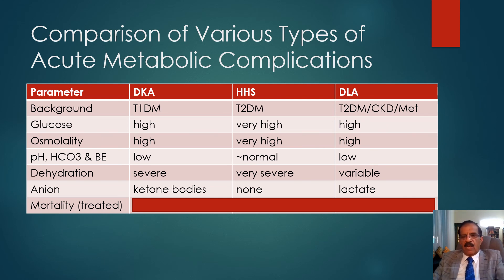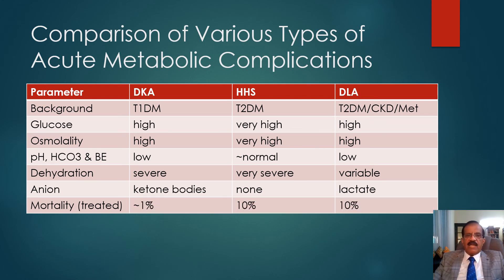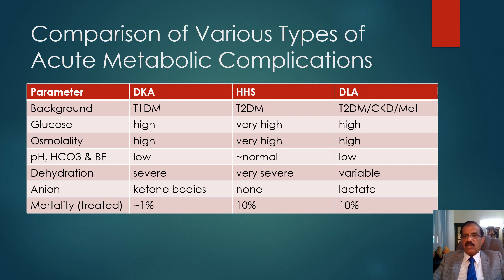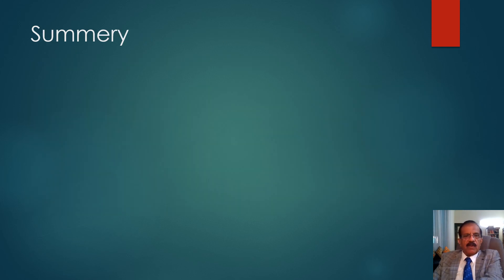Regarding mortality when treated: in diabetic ketoacidosis mortality is 1% or less, giving DKA the best prognosis. In HHS, mortality may be around 10% due to concomitant conditions involving the heart, brain, and kidneys. In diabetic lactic acidosis, mortality can also be up to 10% because it is a serious condition. So out of the three, DKA has the best prognosis, perhaps because it occurs in relatively younger people.